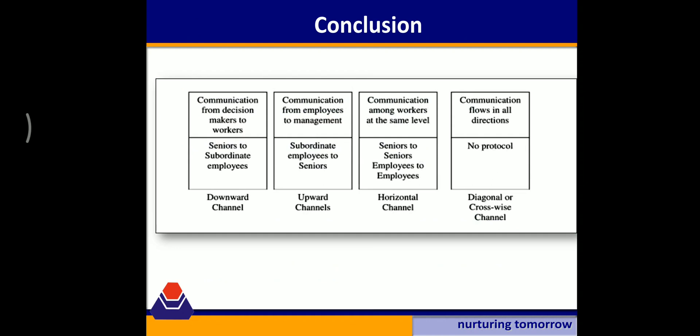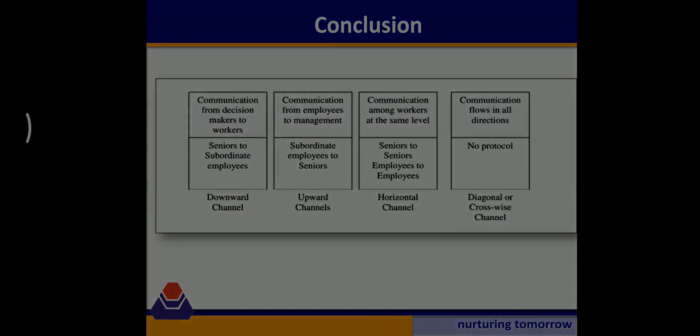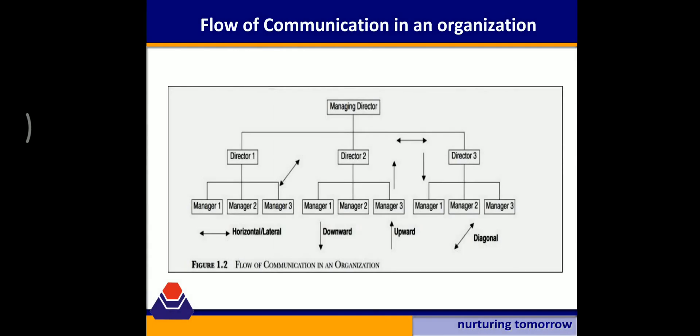To summarize the four channels of communication: downward flow is when communication moves from decision makers to workers, or from seniors to subordinates; upward flow is when communication goes from employees to employers, or subordinates to seniors; horizontal flow is communication among workers at the same level; and diagonal flow moves in all directions and is equally important as the other three.